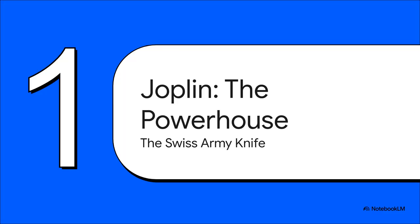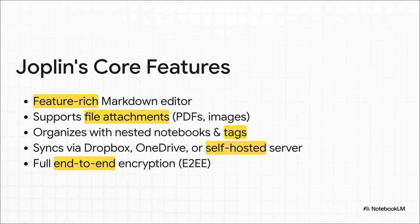First up, let's talk about Joplin. Think of this as your digital Swiss army knife. If you're coming from a tool like Evernote and you want something that can pretty much do everything, this is where you start looking. What jumps out at you right away is just the sheer amount of flexibility. You get a really powerful markdown editor for all your formatting. You can attach basically any file you want — PDFs, images, you name it. And you can organize everything into complex nested notebooks with tags.